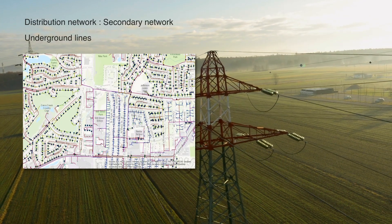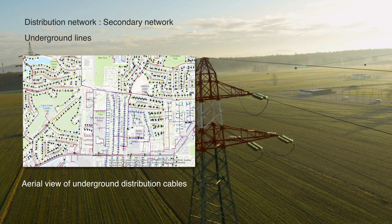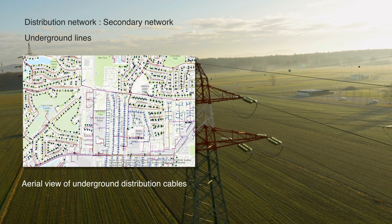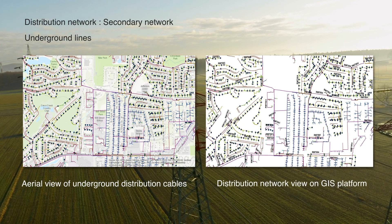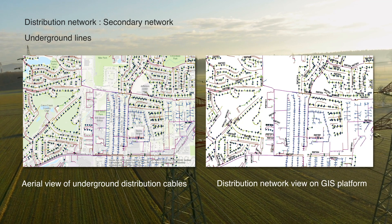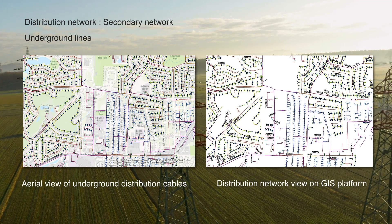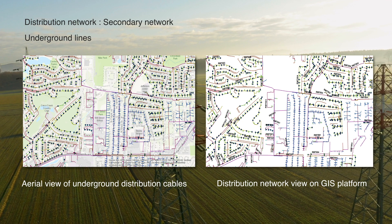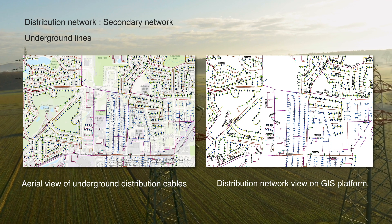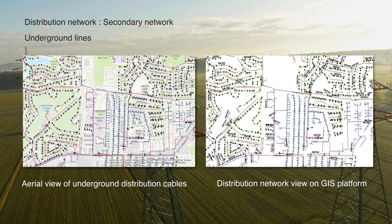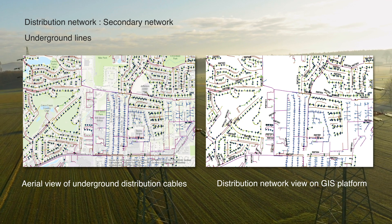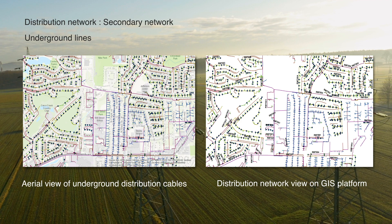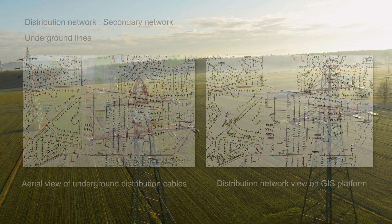There is a definite trend among telecom and utility organizations across many countries to transform overhead assets with underground wands to bring down maintenance costs and increase reliability. Therefore, the GIS domain group created a scalable and more effective distribution model.